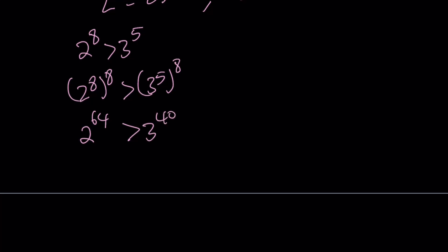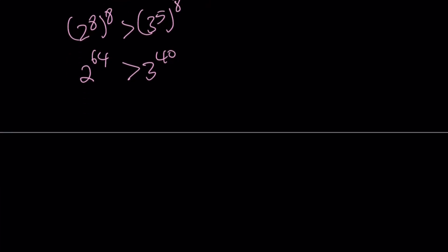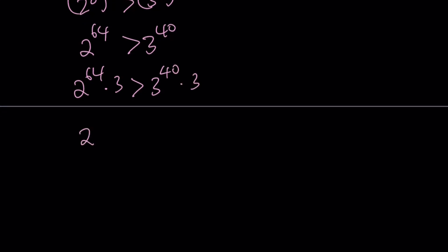You might be asking: I didn't get to 2 to the power 70, nor did I get 3 to the power 41. But don't worry, this is as close as we can get, and then I'm going to adjust it. Notice that we have 2 to the power 64 is greater than 3 to the power 40, but I want to get 3 to the power 41. So it makes sense to multiply both sides by 3, and that obviously does not change the inequality. This gives us 2 to the power 64 times 3 is greater than 3 to the power 41. At least I was able to get 3 to the power 41, but I do not have 2 to the power 70 on the left-hand side. We're going to take care of that now.